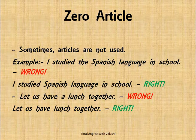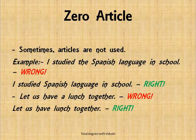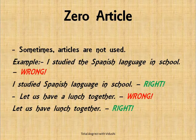There is also something called a zero article — where no article is used at all. Understanding zero articles comes only with practice and familiarity with the language. For example: 'I studied the Spanish language in school' is wrong; the correct form is 'I studied Spanish language in school' — no article needed before Spanish language. Similarly, 'Let us have a lunch together' is wrong; it should be 'Let us have lunch together.' This is occasional and comes with practice.